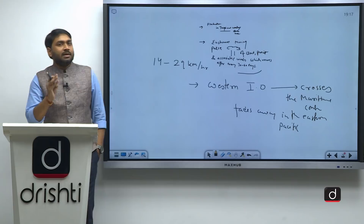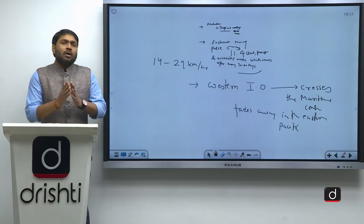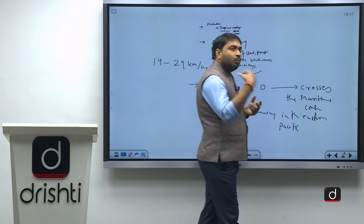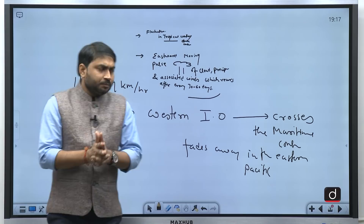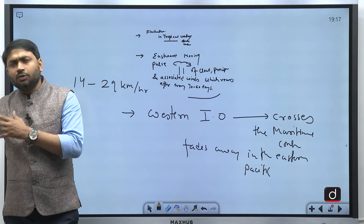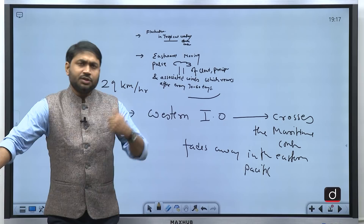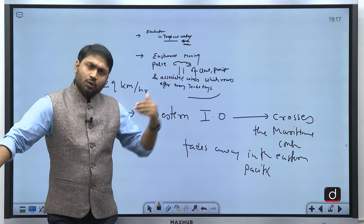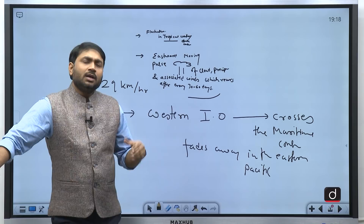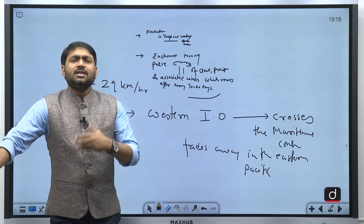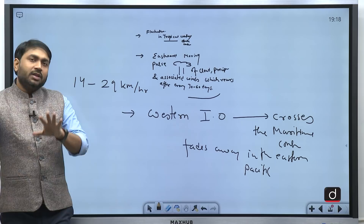So, the three basic points about MJO: number one, it is concerned with tropical weather; number two, it is an eastward moving pulse of enhanced precipitation, cloud cover, and associated winds; and number three, it starts from the western Indian Ocean near the eastern coast of Africa, crosses the Indian Ocean, the maritime continent, Southeast Asian countries, and Australia, then traverses the Pacific Ocean and fades away near the eastern Pacific. Let us now understand this with the help of a diagram.